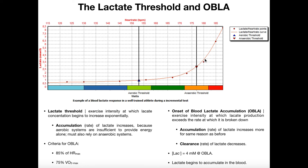Once you cross the anaerobic threshold — or OBLA, onset of blood lactate accumulation — you're not going to be able to exercise at that intensity for very long. At 180 beats per minute, this person is going to fatigue very quickly because they're accumulating lactate and are unable to clear it. Typically, we have several estimations for OBLA. One is when the lactate concentration in the blood reaches four millimolar. It's going to vary on the athlete — dependent on fitness level and genetic differences — but generally a good estimate for OBLA is a lactate concentration of four millimolar in the blood.